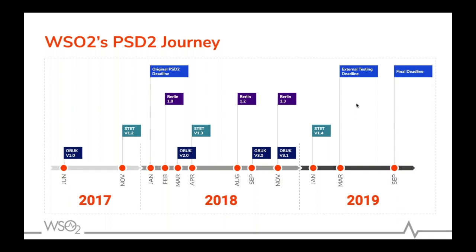We got our first customer compliant with the UK version 1.0 by January 2018 — not a CMA9 customer, but one of the very few banks compliant with version 1 at the time. While we continued to upgrade the WSO2 open banking solution with the latest UK standards updates, we also had to simultaneously keep up with other standards gaining traction in the rest of Europe, such as the NextGenPSD2 spec by the Berlin Group and the STET spec. Those were the two most requested from us, so we decided to focus on those two.